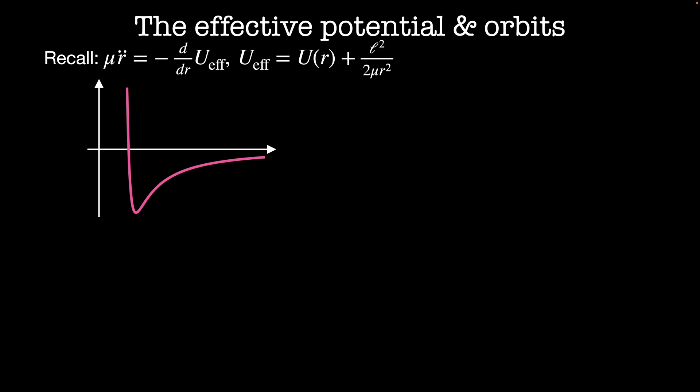then focus on the specific orbits you get from inverse square law potentials. The equation of motion for these systems is given by mu r-double-dot equals minus d/dr of the effective potential, where the effective potential is given by the central potential plus the angular momentum squared divided by 2 mu times r squared, where mu is the reduced mass. Since energy is conserved in this system, we can analyze this the same way we would a regular potential energy landscape.